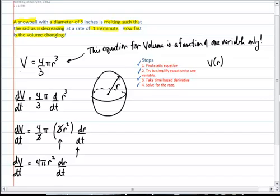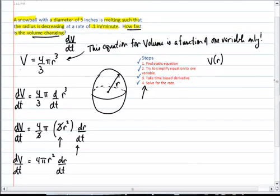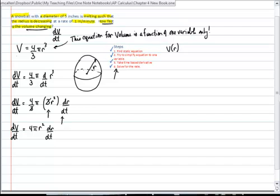If you got this, now we're at the point where we can solve for the rate that they asked for. They asked for how fast is volume changing. That would be dv dt that they want us to solve for.